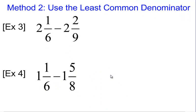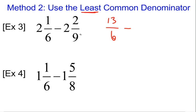The next way to do it is to find the least common denominator. Here, we first have to turn the mixed numbers into improper fractions — we can't have the big whole number out front. So we do 2 times 6 is 12, plus 1 is 13 sixths. Minus — 2 times 9 is 18, plus 2 is 20 over 9.